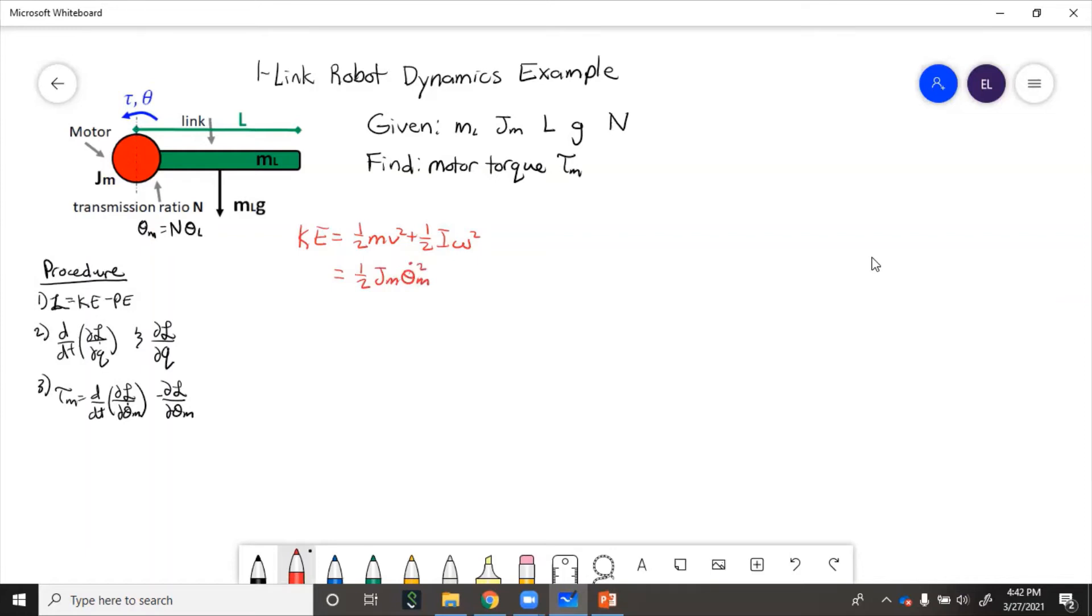Now for the link, we have to include the inertia around the center of mass right here. So we'll have to use parallel axis theorem. We have this formula because the moment of inertia of the link around its central point is one twelfth M_L squared, and then its angular velocity is theta_l dot squared. Then we add in the linear term from parallel axis theorem.